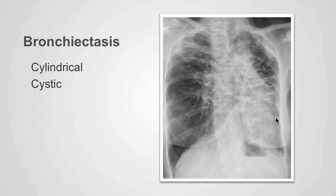In this case, we see multiple cystic areas within both lungs that contain small air-fluid levels. These are infected bronchiectatic cysts within the left lung predominantly, but are also present on the right.